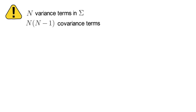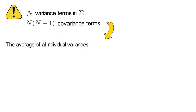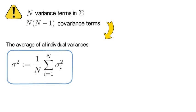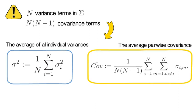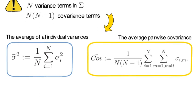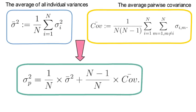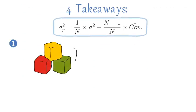The variance of the holding period return of that equal weight portfolio equals the following expression. Notice there are N variance terms in capital sigma and N times N minus 1 covariance terms. We therefore define the average value of all individual variances as sigma bar squared, and we define the average pairwise covariance term as covariance bar. That allows us to re-express the variance of the holding period return of the equal weight portfolio as the following expression.